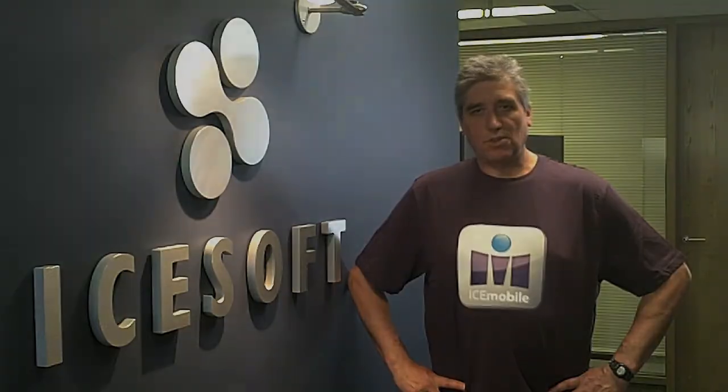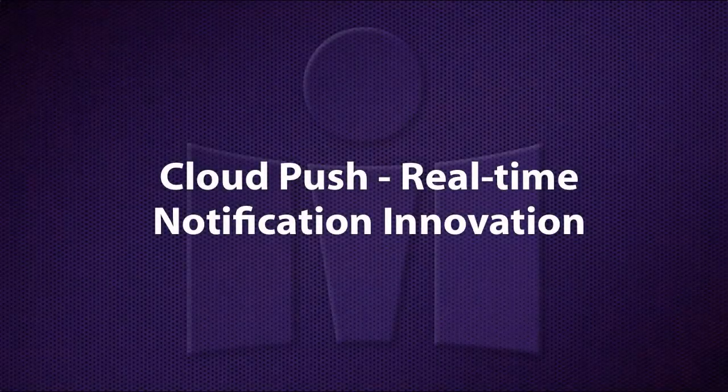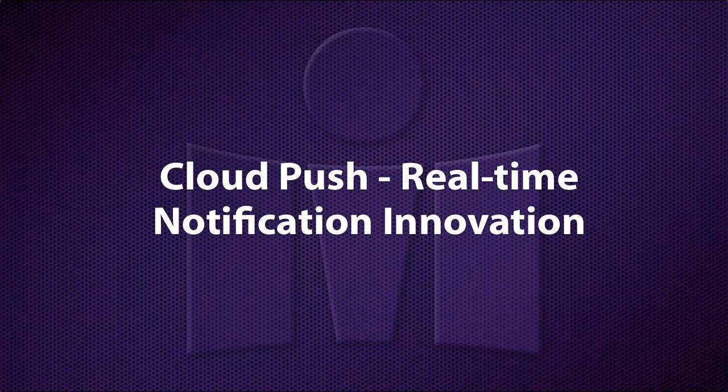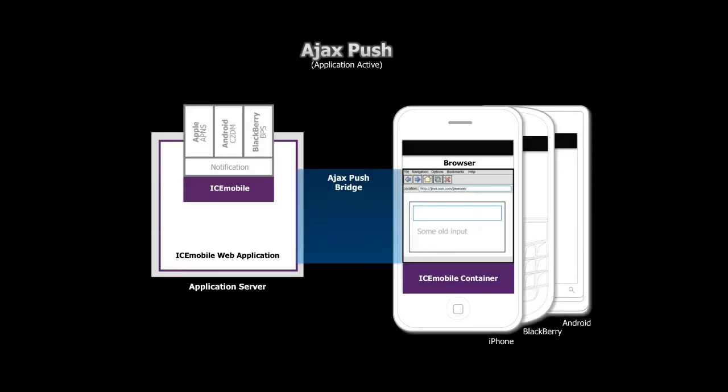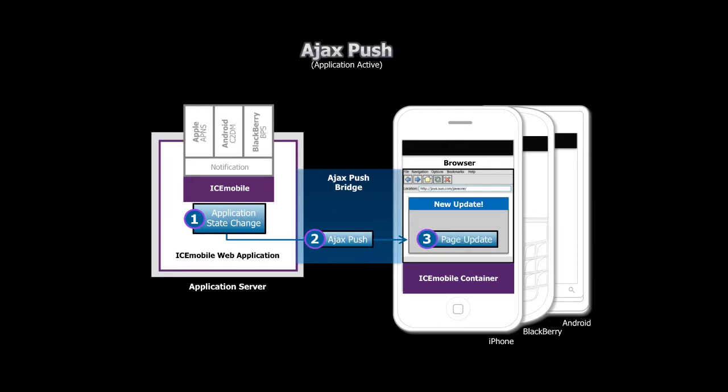On top of this, we have our push infrastructure — both our AJAX push and our new cloud push features — so you can always deliver notifications to the user. ICE Mobile uses AJAX push to deliver instantaneous page updates to the application, which is necessary to match the instantaneous nature of native applications.